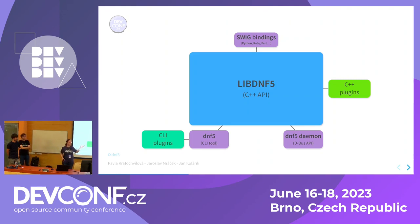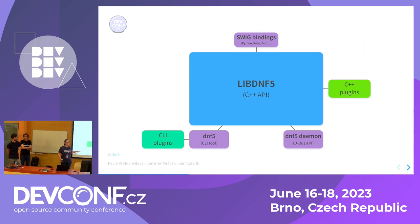You can notice there are actually two boxes for plugins, but now these are actually different. There are C++ plugins for the library and then there are plugins for the command line interface. For example, adding a new command would go in the CLI plugins, while something that alters the whole DNF run would be in the library plugins and could also be used by the daemon.